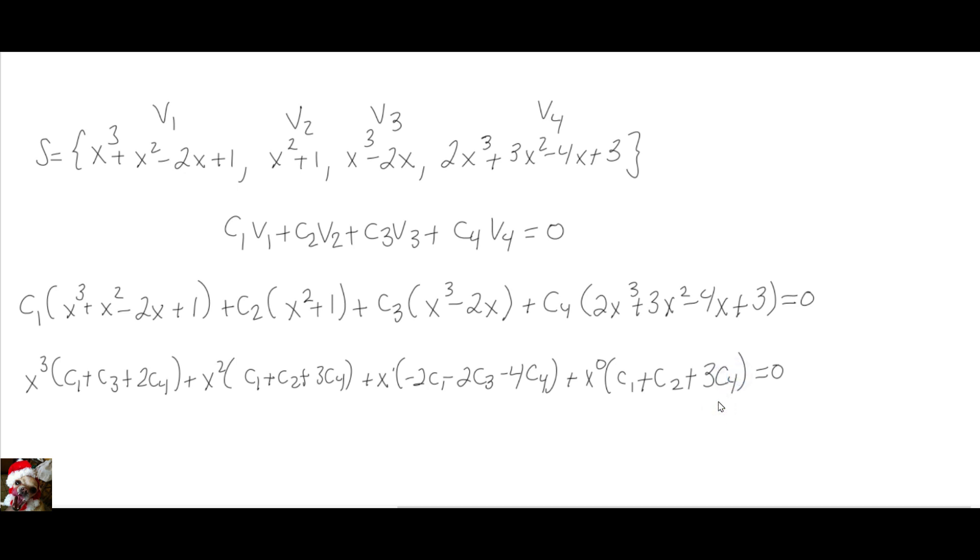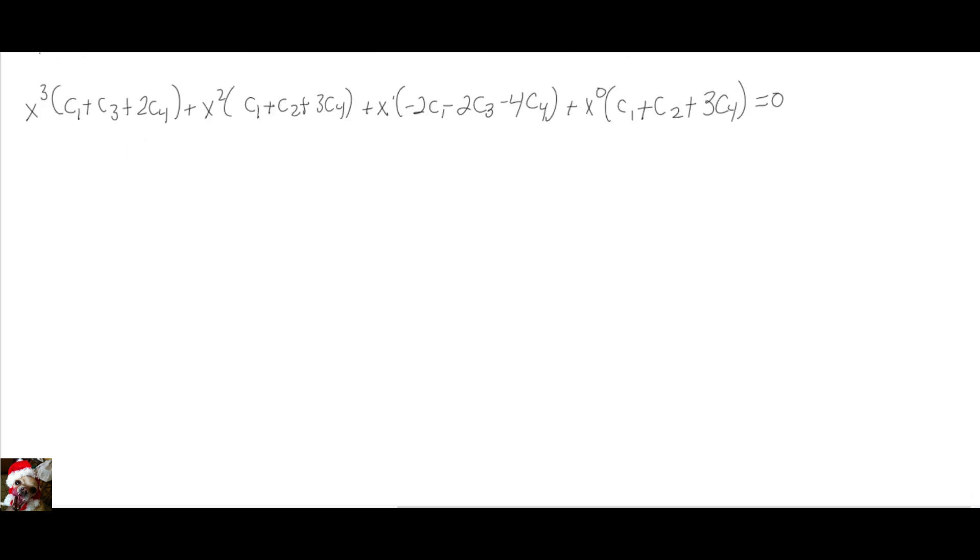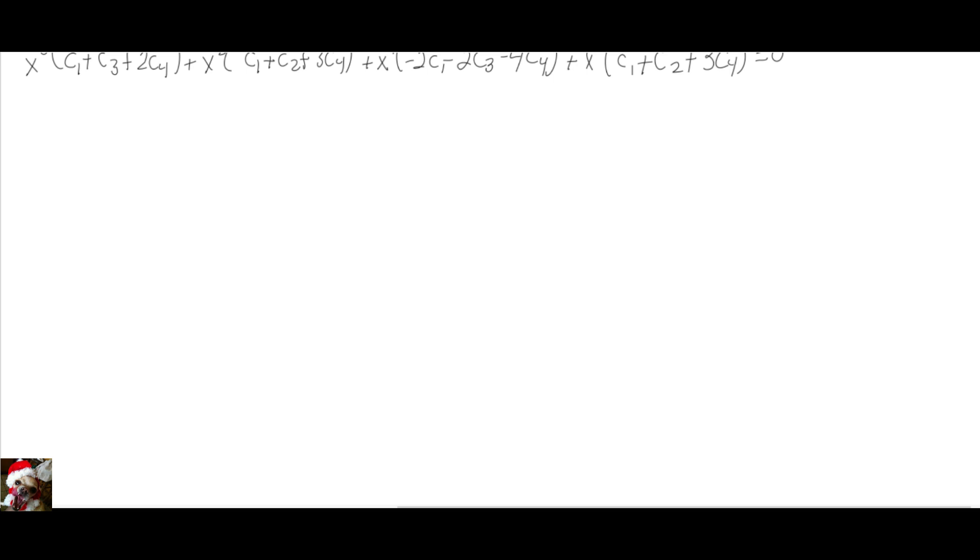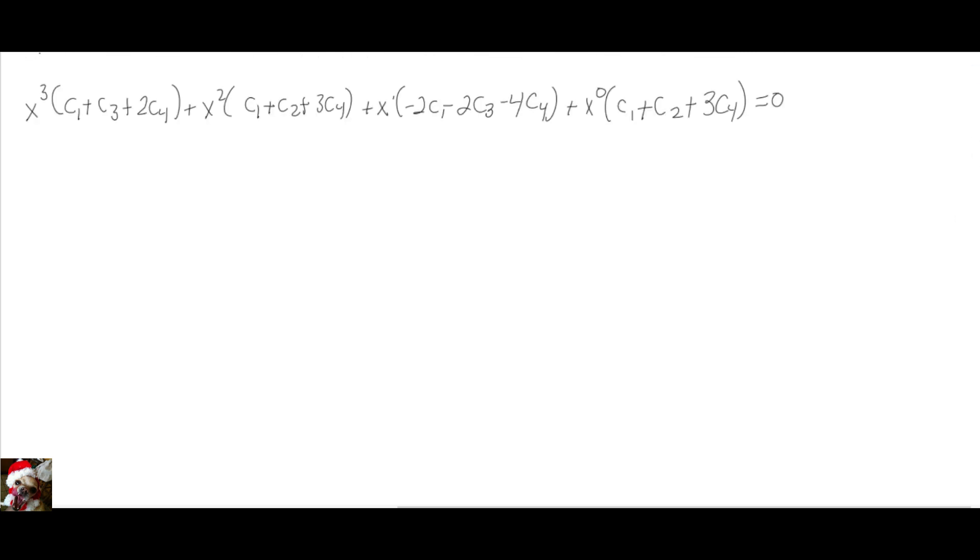So now, since they're equal to 0, they're equal to the 0 polynomial. We know that that is equal to 0. We're going to equate that equal to 0, so each of the C's is equal to 0. This equation is equal to 0, this equation right here is equal to 0, and this equation is equal to 0. So we'll write down a system of four equations and four unknowns.